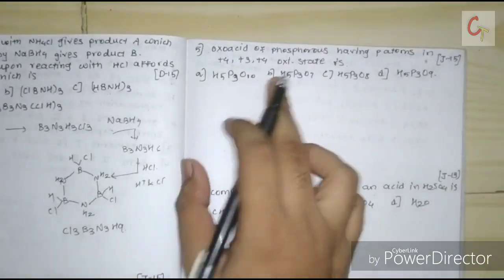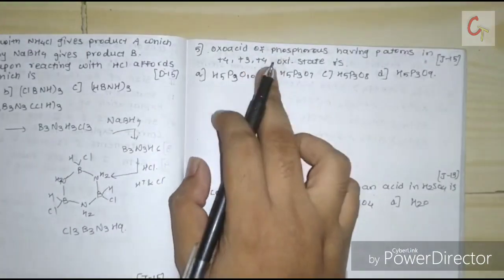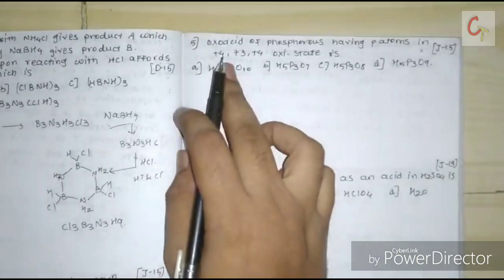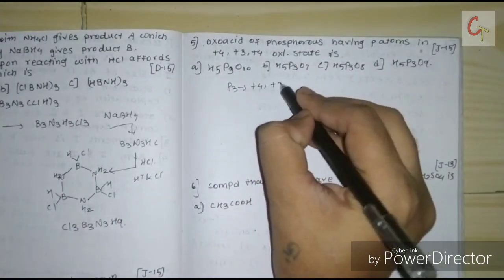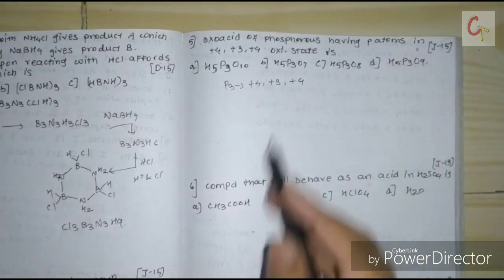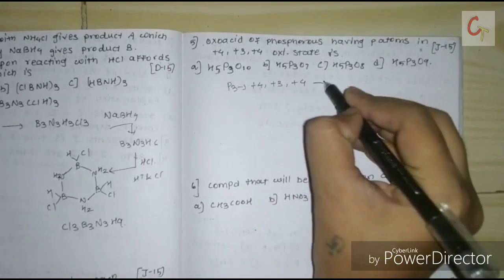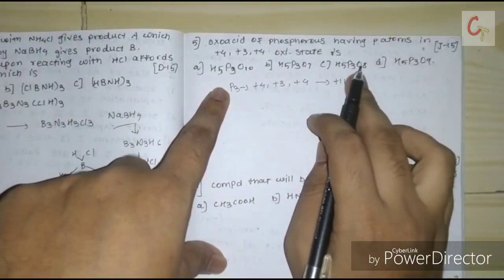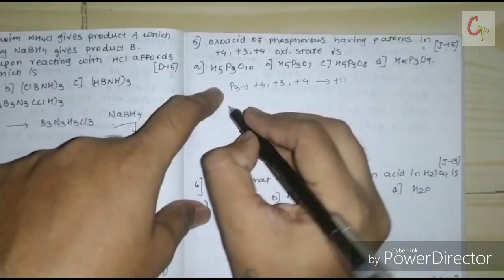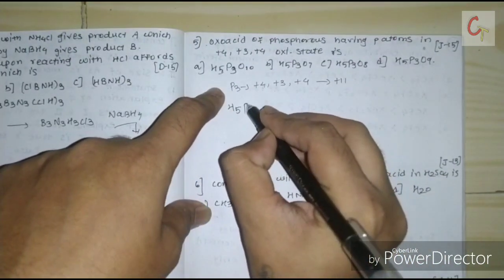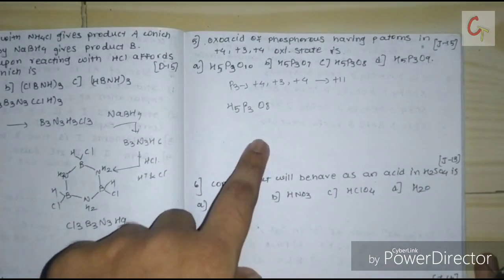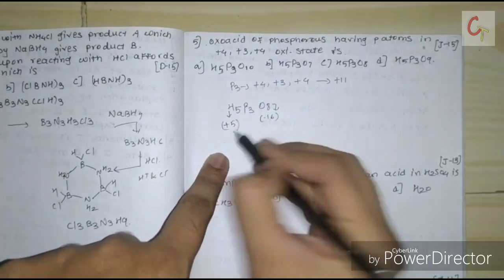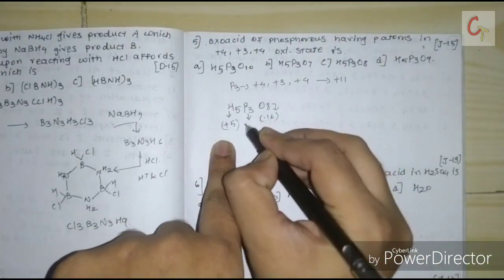The next question: from the following oxidized phosphorus compounds, which contains one phosphorus in +4, one in +3, and one in +4 oxidation state — meaning three phosphorus atoms with a total oxidation state of +11? We need to look at each structure. Taking compound number 3: oxygen gives −2, so total from oxygen is −16; hydrogen gives +5; therefore phosphorus contribution is 16 − 5 = +11.